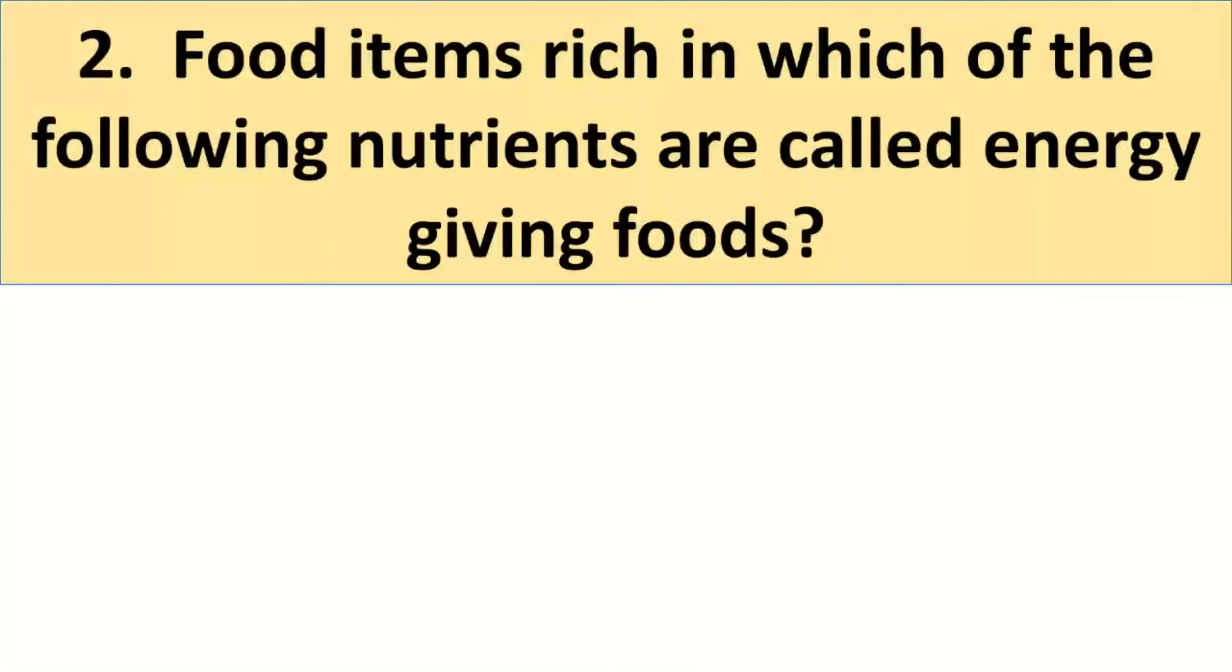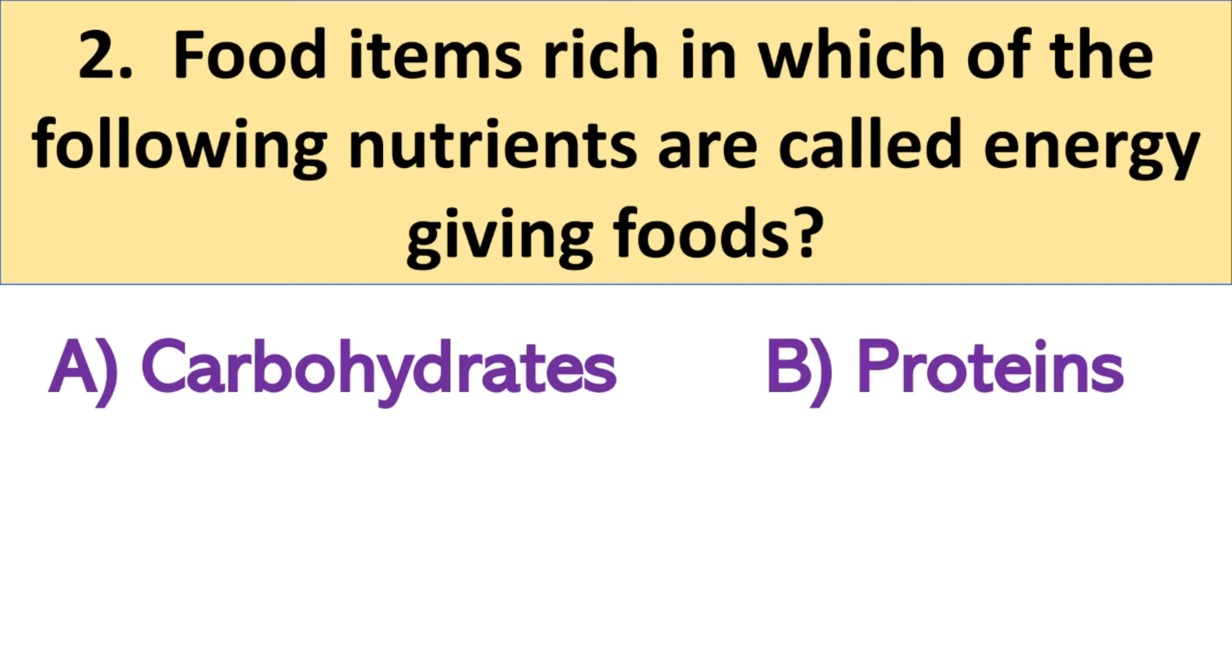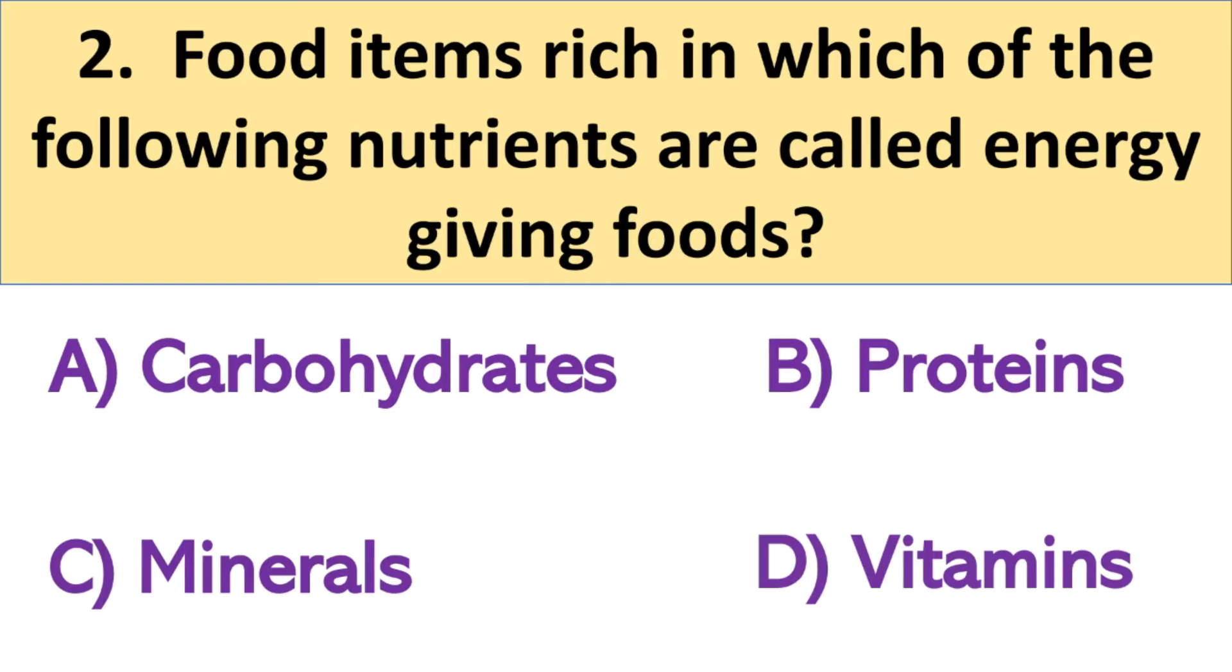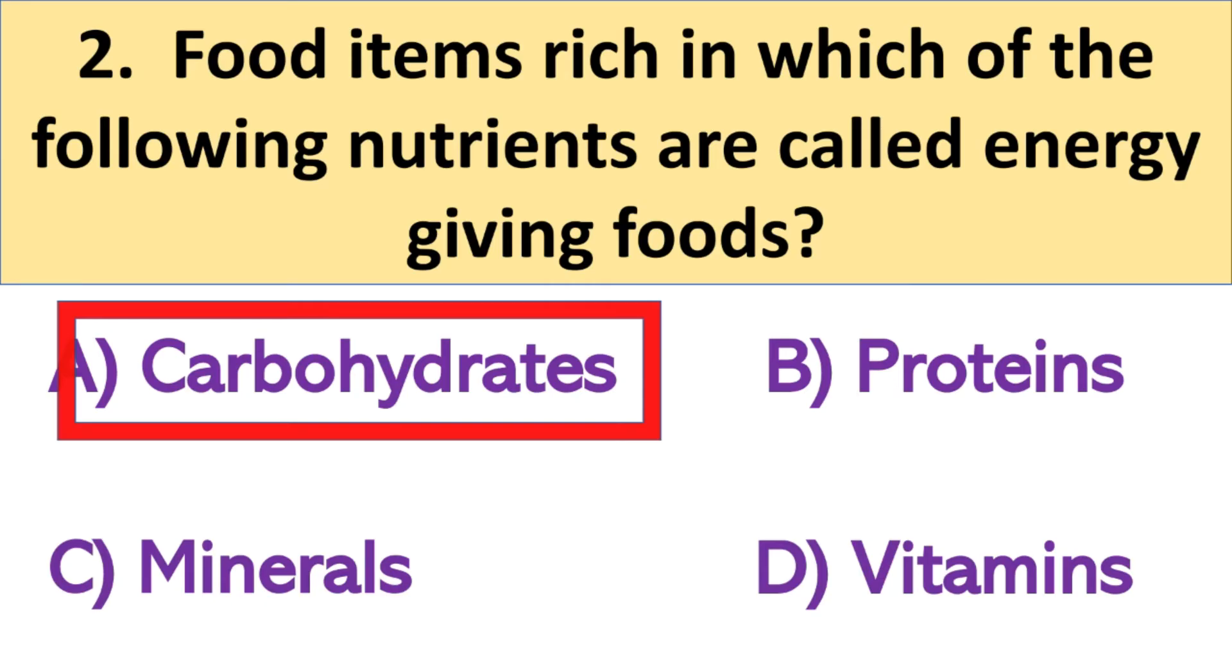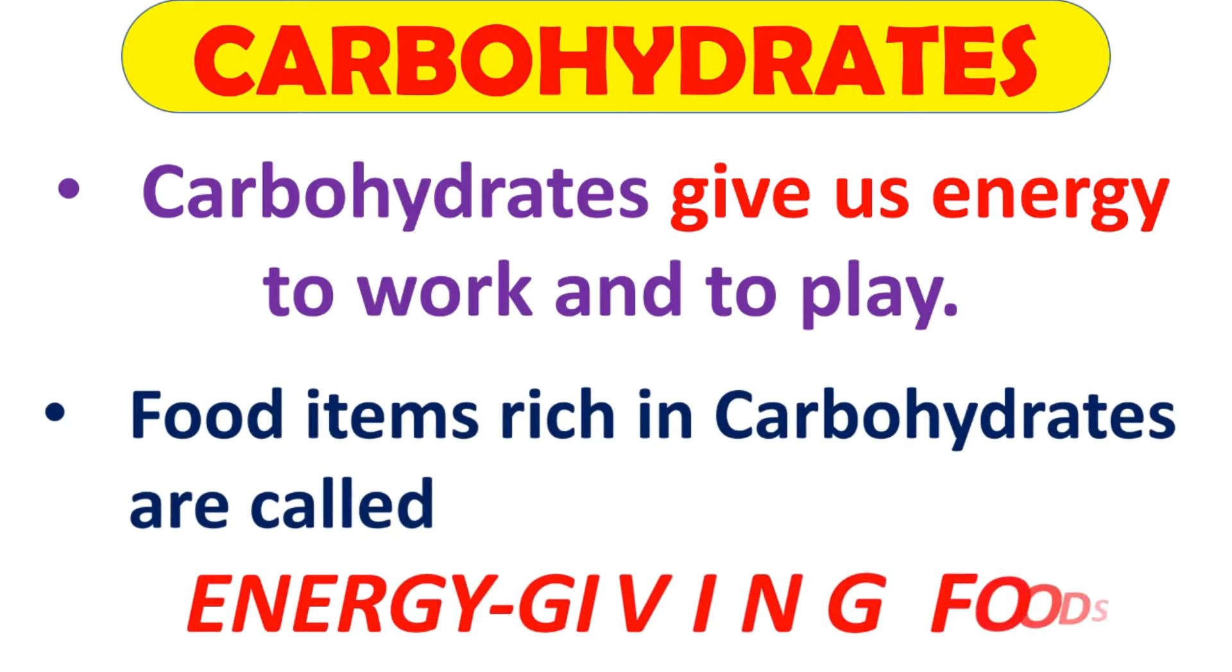And next question is, food items rich in which of the following nutrients are called energy giving foods? And your options: A. Carbohydrates, B. Proteins, C. Minerals and D. Vitamins. And the right answer is A. Carbohydrates. Carbohydrates give us energy to work and to play. And the food items rich in carbohydrates are called energy giving foods.